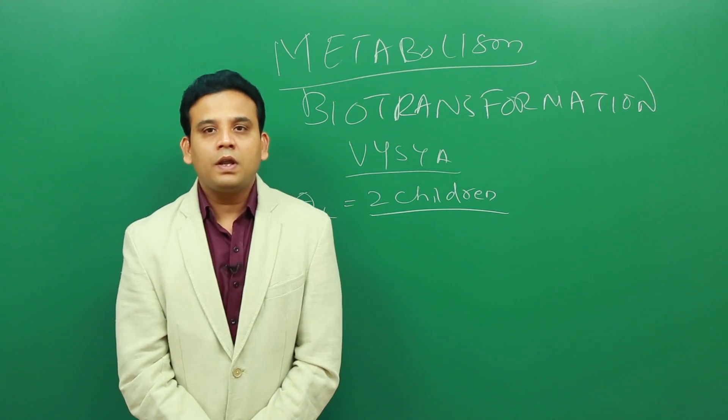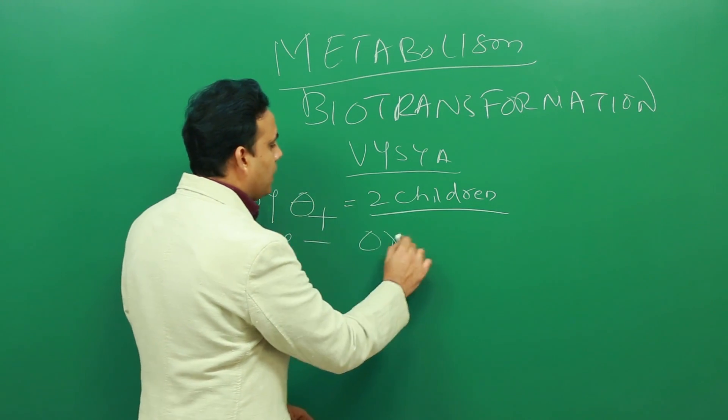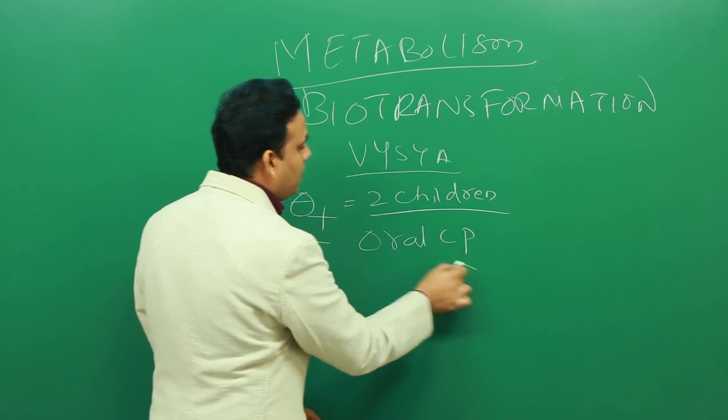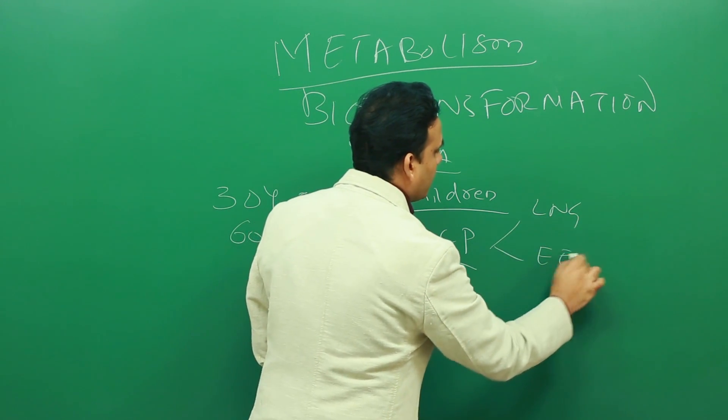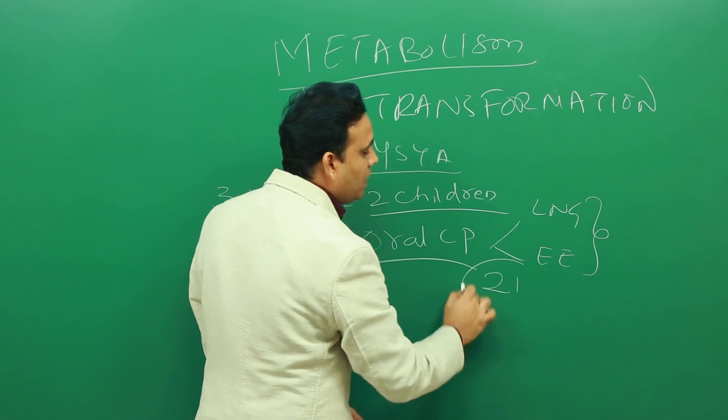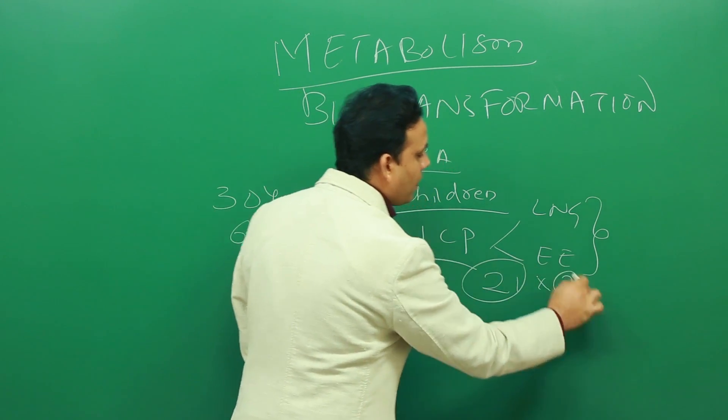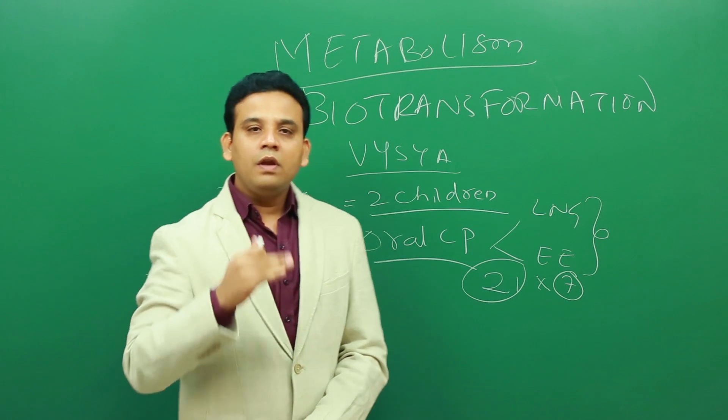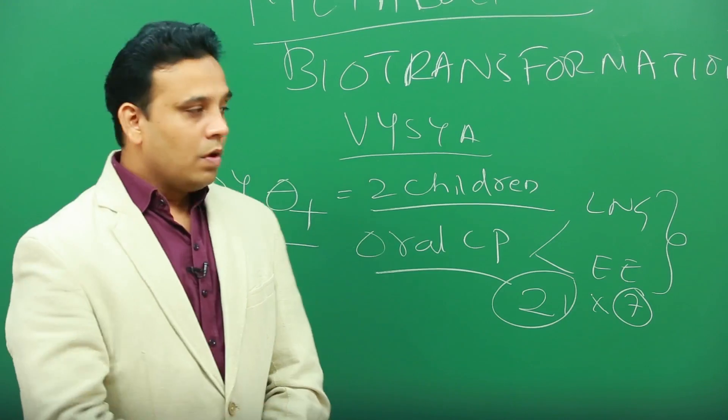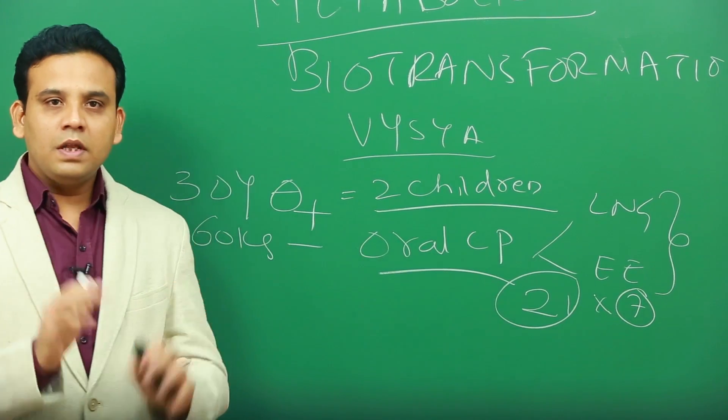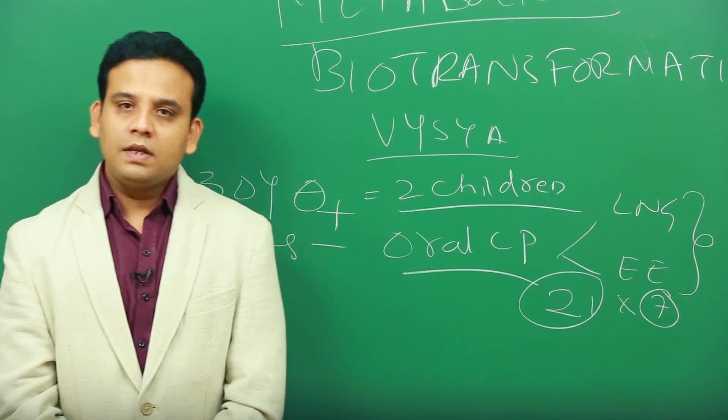Obviously, the contraception usually we prefer in OPD is oral contraceptive pills (OCP), which consists of levonorgestrel and ethinyl estradiol. These drugs are given 21 days in a month and seven days gap. This will be continuing for as long as you want to have contraception.